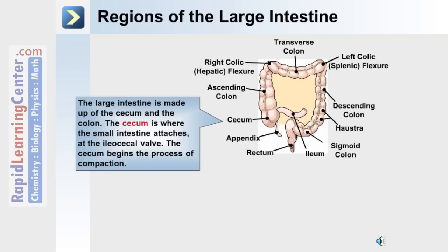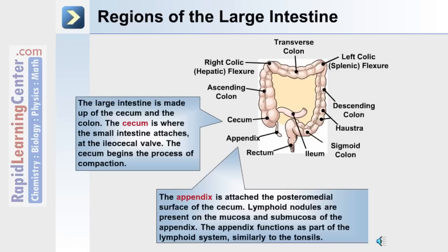The large intestine is made up of the cecum and the colon. The cecum is where the small intestine attaches and begins the process of compaction. The appendix is attached to the posteriomedial surface of the cecum. Lymphoid nodules are present on the mucosa and submucosa of the appendix, and it functions as part of the lymphoid system, similarly to the tonsils.